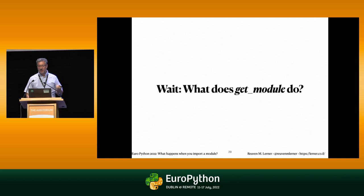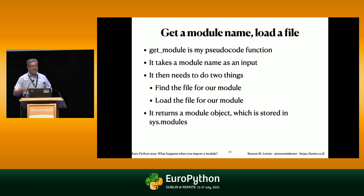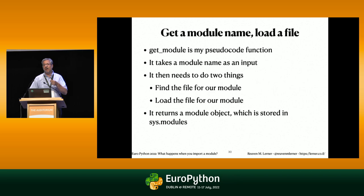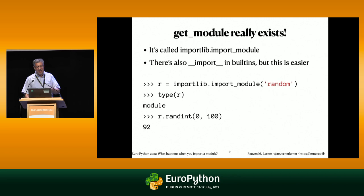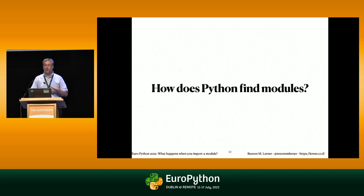Going back to my pseudocode — I keep saying 'get_module'. What does it do? It's my pseudocode function 'find': takes a module name as input, finds the file for the module, then loads that module based on that file name, and returns a new module object. The actual function is importlib.import_module. I can say 'r = importlib.import_module("random")' and it's exactly as if I had said 'import random' or 'import random as r'. You can play with this if you want, but you probably shouldn't.